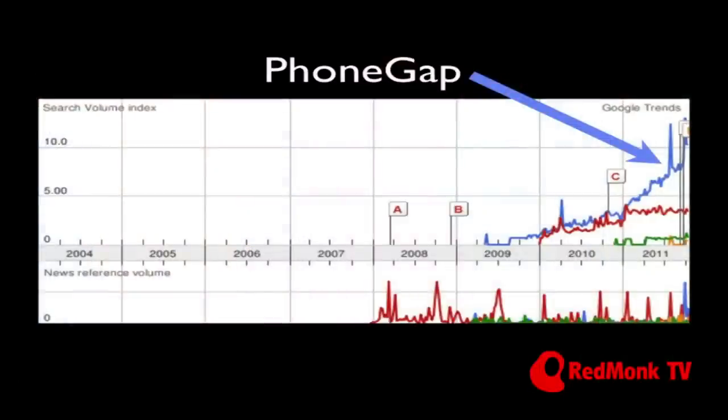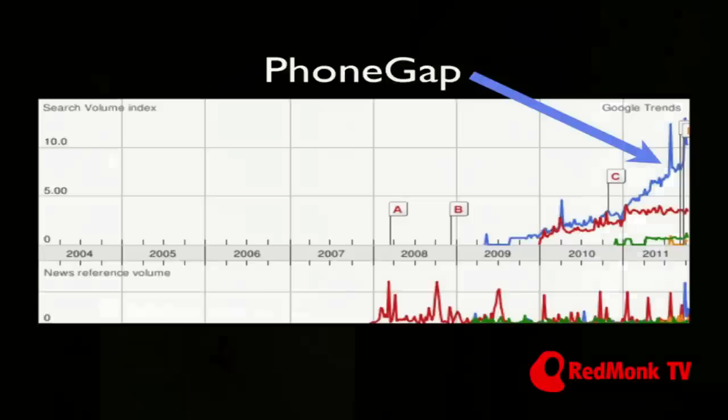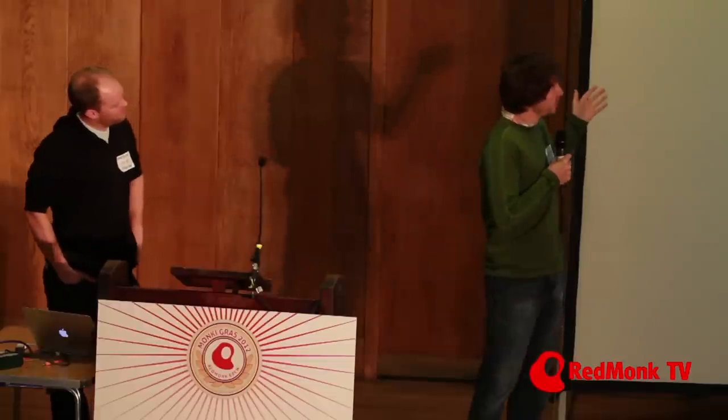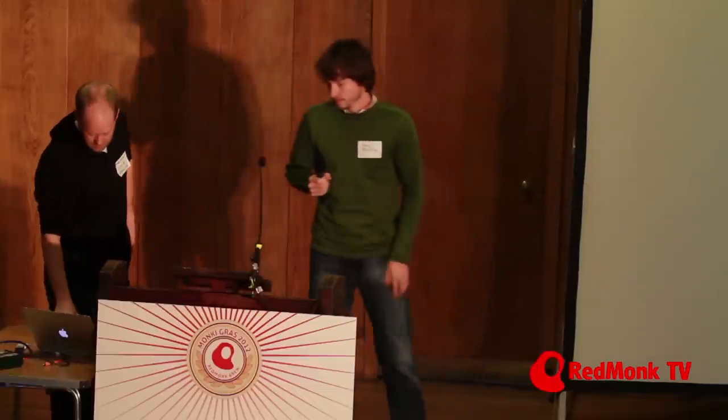Looking at a Google Trends graph, the blue line is PhoneGap search volume index compared to competitors. Our nearest competitor does very well in news reference volume — they have a great marketing department putting out press releases. But over the full history of the project, PhoneGap's search volume has been very strong compared to news reference volume. This shows how important community and open source have been rather than putting out press releases in artificial ways.